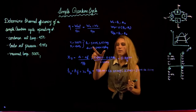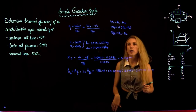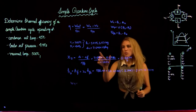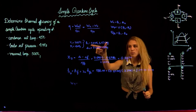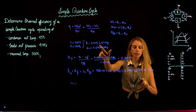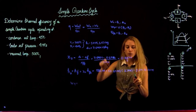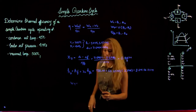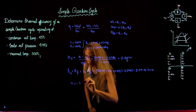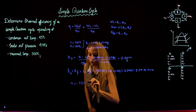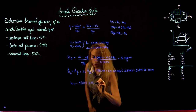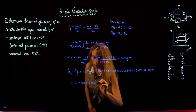Now that we have H1 and H2, we can find the work of the turbine right away. So we do 3,445.3 minus 2,241.06, which gives us a turbine work of 1,204.24 kJ per kg.